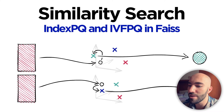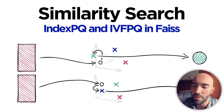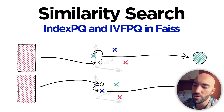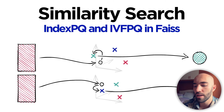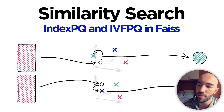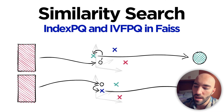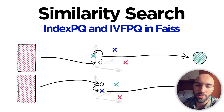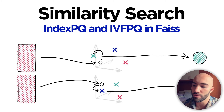Hi, welcome to this video. We're going to look at how we can implement a product quantization index, IndexPQ, in FAISS, and also how we can implement a composite index using an inverted file list IVF and PQ together to improve our performance even further.